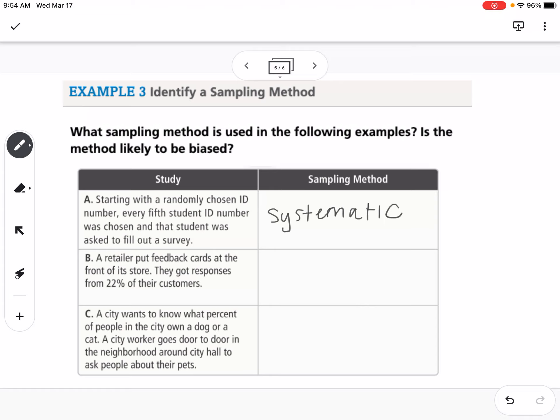B says a retailer put feedback cards at the front of its store. They get responses from 22% of their customers. That would be self-selected. And there probably is likely to be bias, because we know that usually people that have strong feelings, one way or the other, are more likely to self-select or volunteer to take surveys of those types. You're probably going to get people that are maybe upset about something, or had a really great experience and want to tell about it. So there could be bias in that.